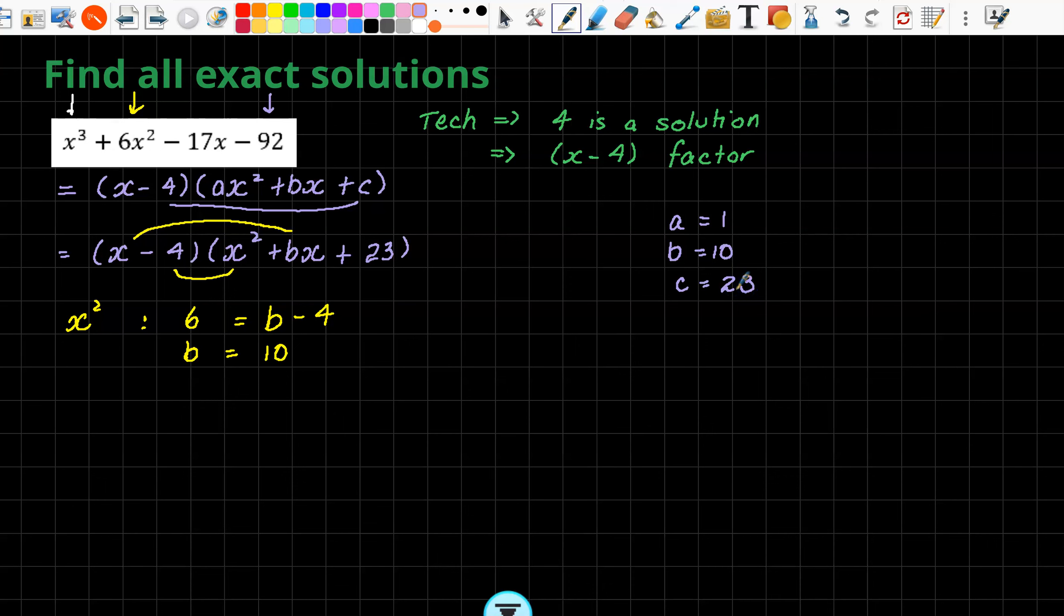Remember, we've used this one, we've used the 92. So now let's use the x squared. So if I'm using x squared, it means 6 has to equal. Now, how do I get an x squared? It's going to be x times bx, so that's going to be b, and then minus 4 times x squared, so minus 4. So therefore, b has to equal 10. We've got b is 10, c is 23.